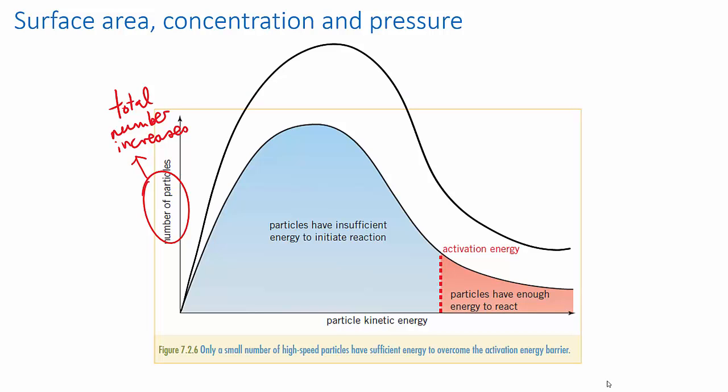The shape of the distribution remains the same, give or take my dodgy drawing. The proportion of particles with any particular speed doesn't change, it's just that there are more of them crowded together.